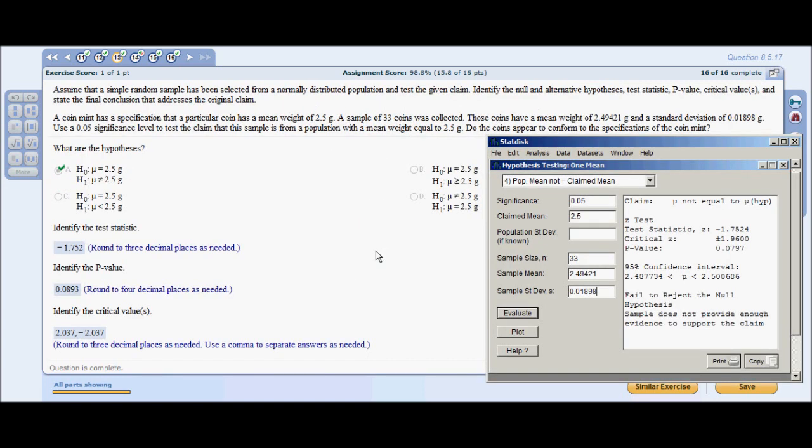Problem 13: A coin mint has a specification that a particular coin has a mean weight of 2.5 grams. A sample of 33 coins was collected. These coins have a mean weight of 2.4921 grams and a standard deviation of 0.01898 grams. Use a 0.05 significance level to test the claim that the sample is from a population with a mean weight equal to 2.5 grams. You're going to use your H0 and H1 as equal to and not equal to, as the problem suggests.